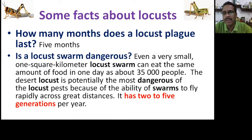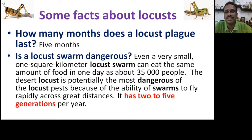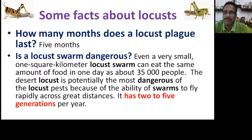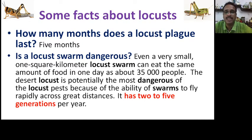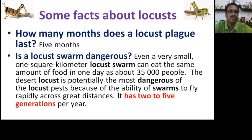How long does a locust plague last? Normally about five months. Locusts are dangerous — even though they don't carry diseases or bite, one square kilometer of locust swarm can eat the same amount of food as 35,000 people in a day. The desert locust is potentially the most dangerous, which is what India has been experiencing. Swarms can fly rapidly across great distances and have two to five generations per year.